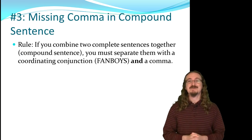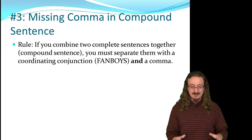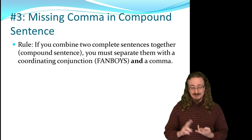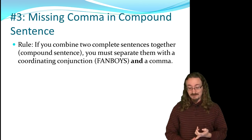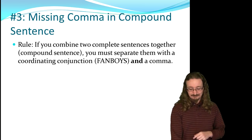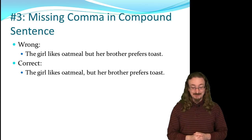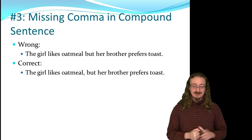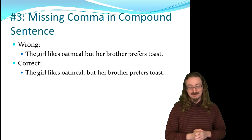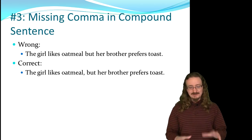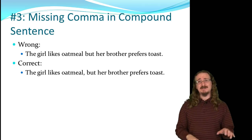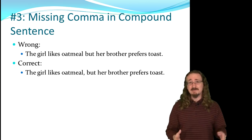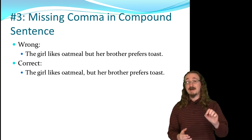Number 3: missing commas in a compound sentence. If you combine two sentences, you need two things: a comma and a coordinating conjunction — one of the FANBOYS. 'The girl likes oatmeal but her brother prefers toast' is missing a comma — it should be 'The girl likes oatmeal, but her brother prefers toast.' If you're unsure, check if each part is a complete sentence and if there's a FANBOYS conjunction between them — if so, you need the comma.